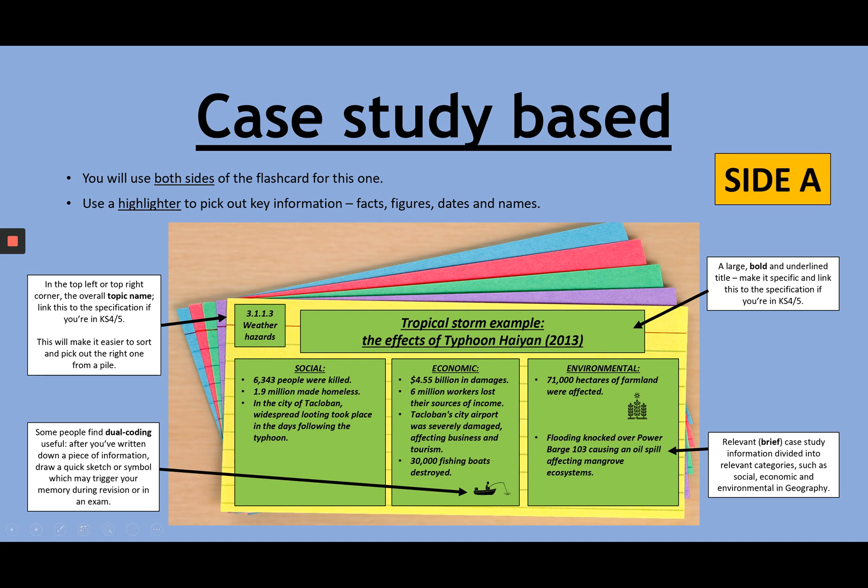We then have here this box telling you to have a very large, bold, and underlined title. So a very clear title. Here, it's Tropical Storm Example, the effects of Typhoon Haiyan in 2013.